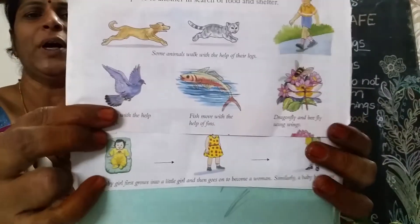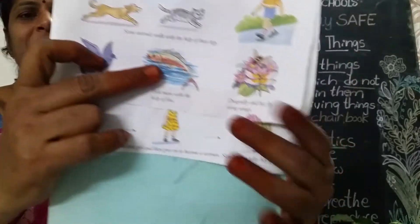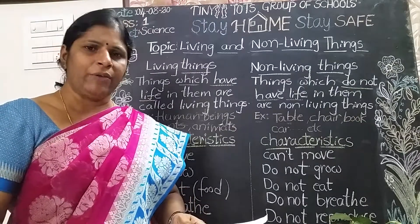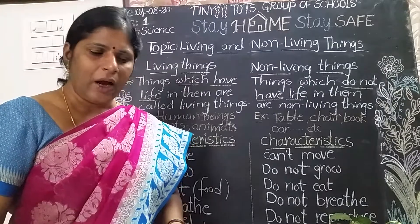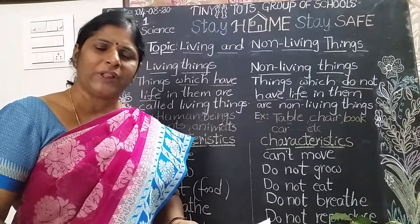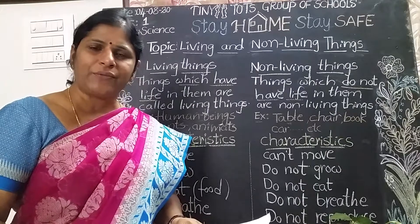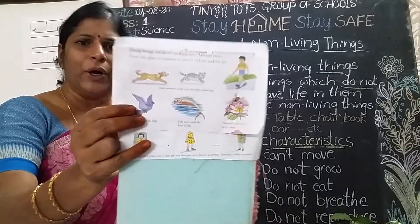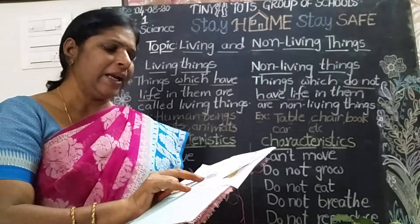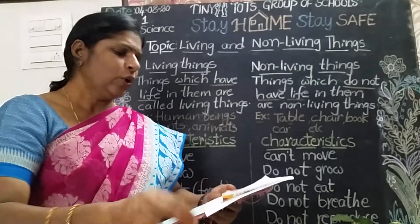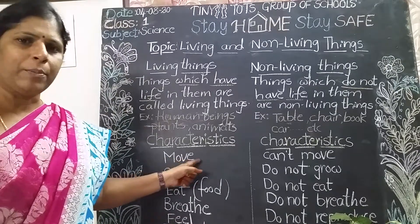How does a bird fly? Birds fly with the help of wings. Fishes also move in water with the help of fins. We move with the help of our legs — legs help us for moving, walking, and running. All living organisms move from one place to another with the help of their body parts.